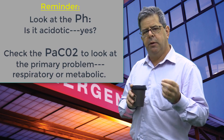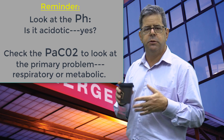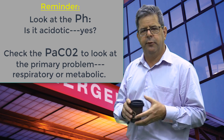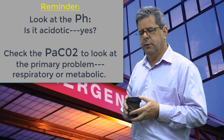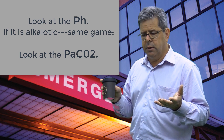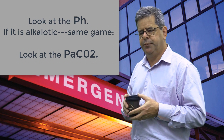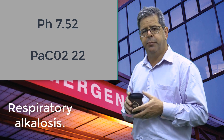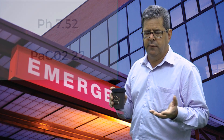To recap acidosis: if the CO2 is elevated, the primary problem is respiratory acidosis; if CO2 is low, the primary problem is metabolic acidosis. Now let's look at alkalosis. Again, start with the pH — you're alkalotic. Check the CO2 next. If the CO2 is down, it's going to be a respiratory alkalosis. Think of things that increase ventilation: anxiety, pain, hypothyroidism — you're breathing faster and blowing off CO2.